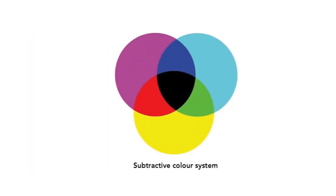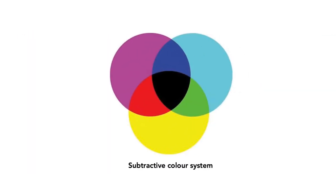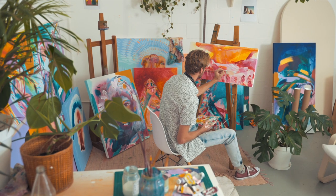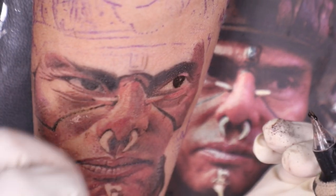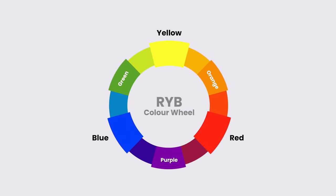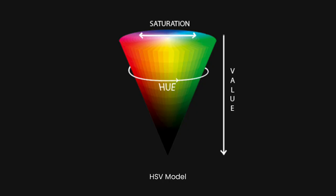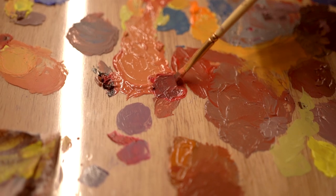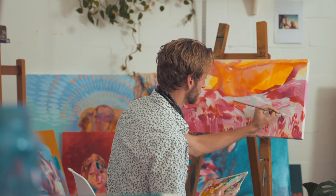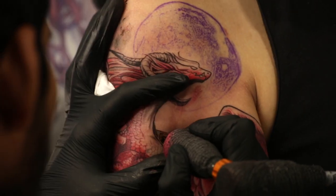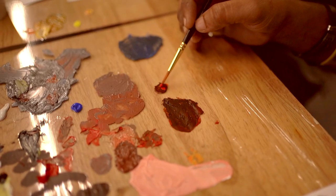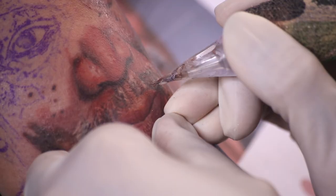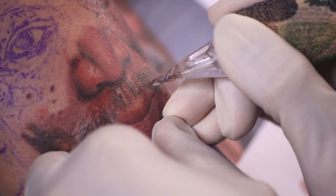We will study the two most important color models widely used by humans: the additive color model and the subtractive color model, and how the subtractive color model builds a foundation for color painting and tattoo art. We'll also look into the concept of the color wheel, the HSV color model, and the CMYK color model.